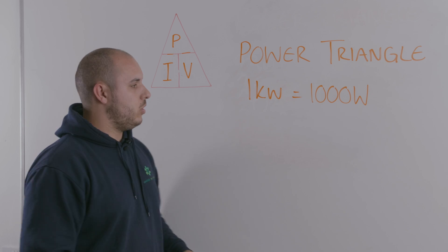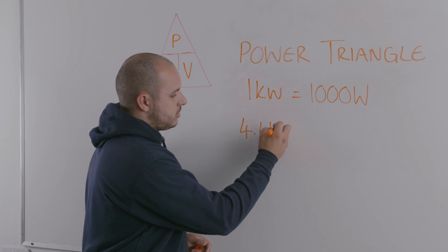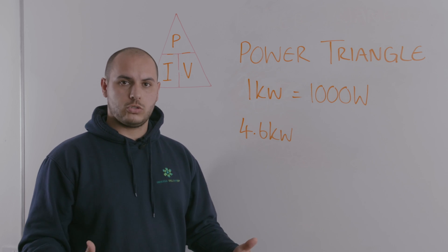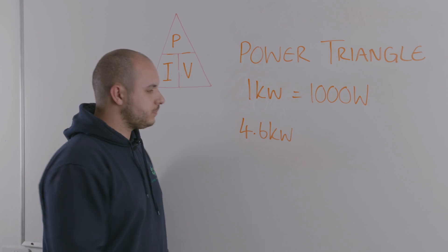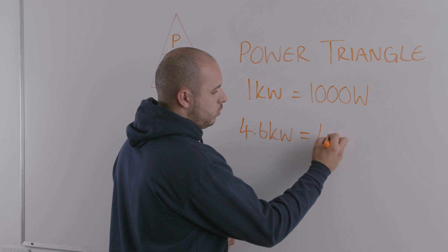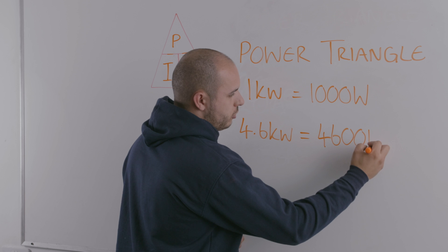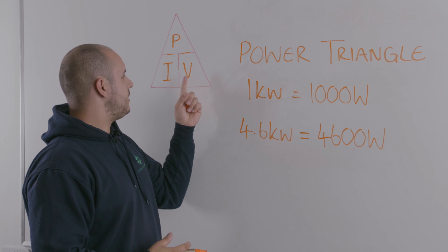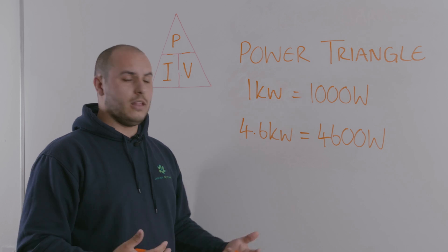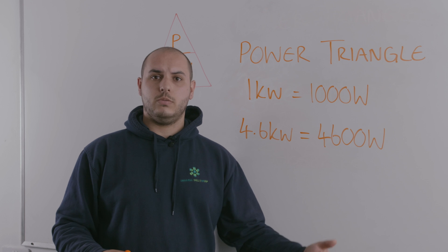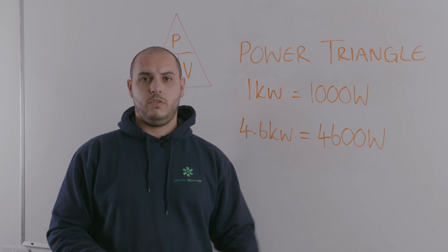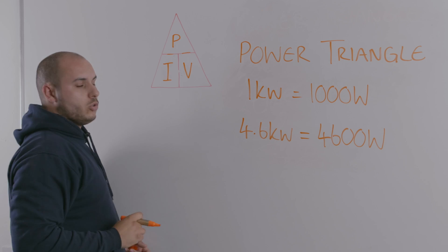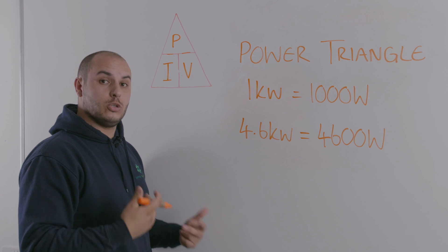For this scenario, we're going to look at a 4.6 kilowatt — say that's an oven or something like that. So 4.6 kilowatts: we need to convert that into watts before we put it into the triangle. So 4.6 kilowatts into watts would be 4,600 watts. What we're trying to achieve here is to find out what the current for that circuit is. If we put our 4,600 watts into the top and we know our nominal voltage used for our calculations is going to be 230 volts.